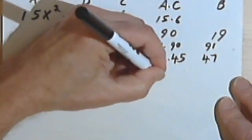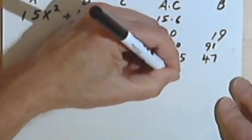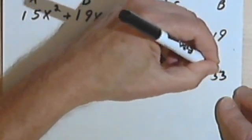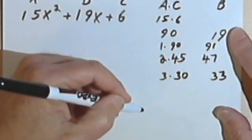I can divide 90 by 3. So 3 times 30 is 90, and 3 plus 30 is 33. I'm getting closer to 19, but I've got a ways to go.